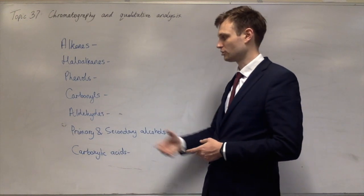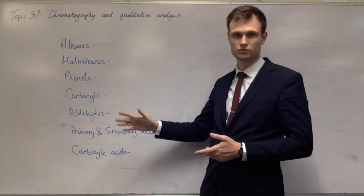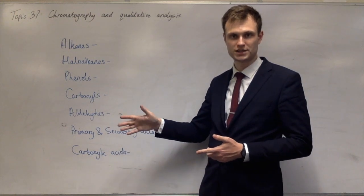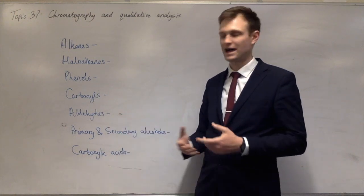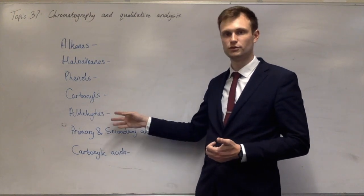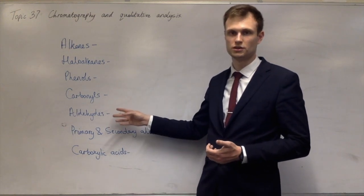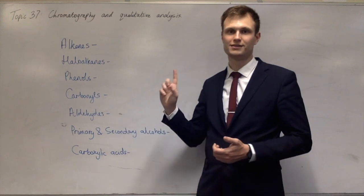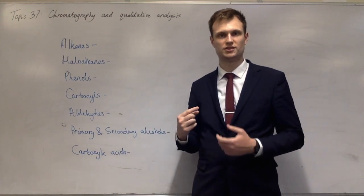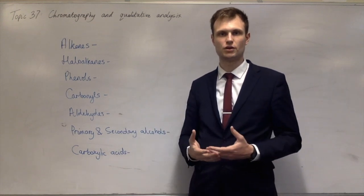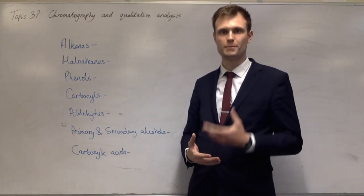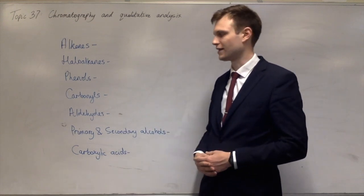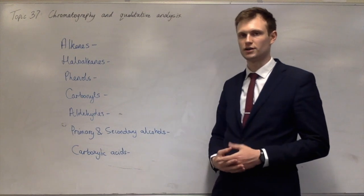The next one up is aldehydes. That is the Tollens' reagent silver mirror test. You add ammoniacal silver nitrate solution, and if you get a silver mirror — which is a precipitate of silver metal — then that is an aldehyde.